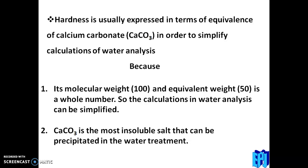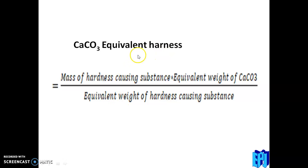In this video you have to learn one key equation. The CaCO3 equivalent hardness — or the hardness of a solution — is equal to: mass of hardness-causing substance, multiplied by the equivalent weight of CaCO3, divided by the equivalent weight of the hardness-causing substance.